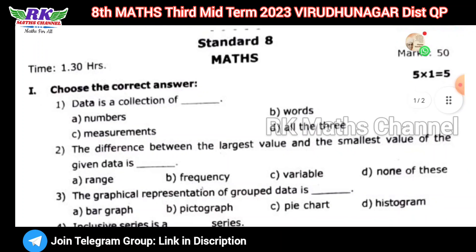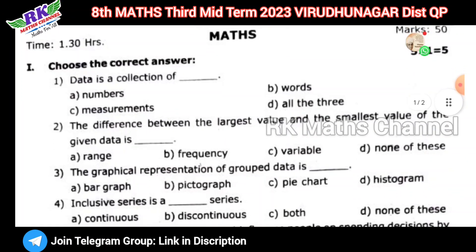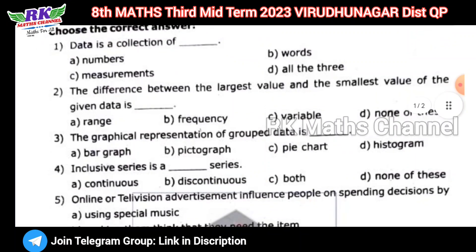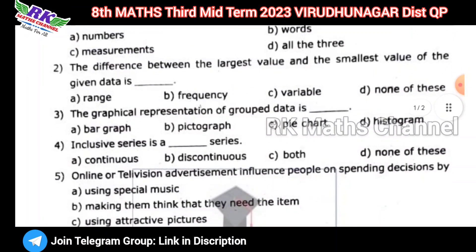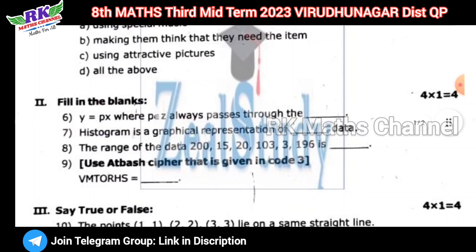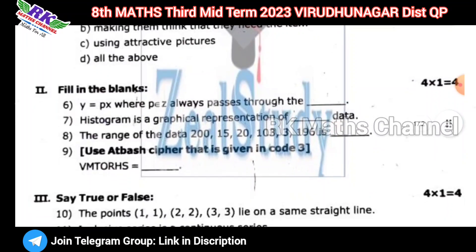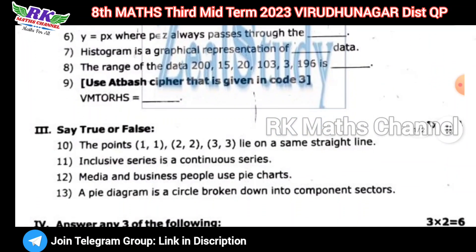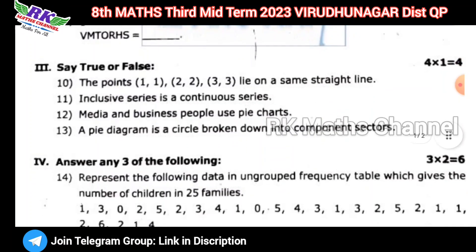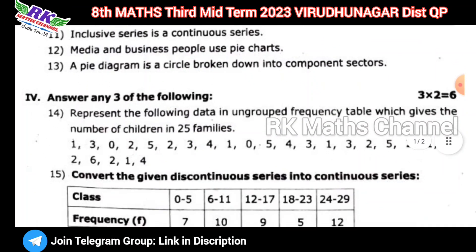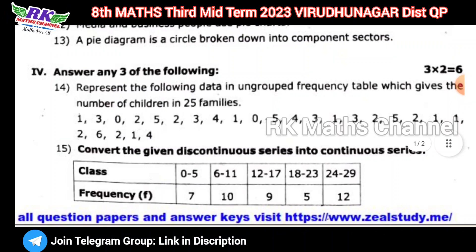If you have a question paper, please take it out. The total is 50 marks. First, look at 5 bits — choose the correct answer for 5 marks. Next, fill in the blanks for 4 marks. True or false for 4 marks.